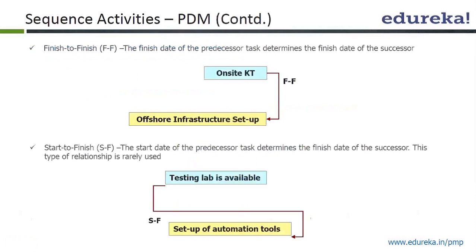Going to the next: finish-to-finish relationship. The finish date of the predecessor task determines the finish date of the successor. You cannot finish offshore infrastructure setup unless and until you finish on-site knowledge transfer. Another example: writing a document is the predecessor task — it is required to finish before editing the document can finish. So writing and editing have a finish-to-finish relationship.